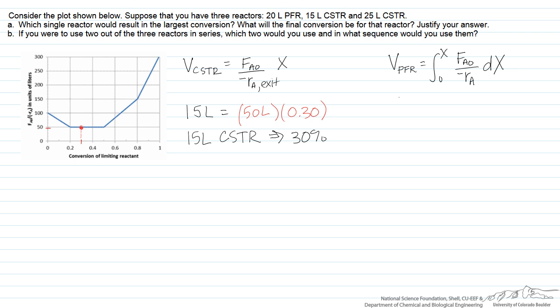Next we consider the 25-liter CSTR. If we pick a conversion of 50%, we again use only the exit conditions and read off the same reaction rate. We see that we achieve a conversion of 50% in a 25-liter CSTR, which is greater — not surprisingly — than in the smaller 15-liter CSTR.